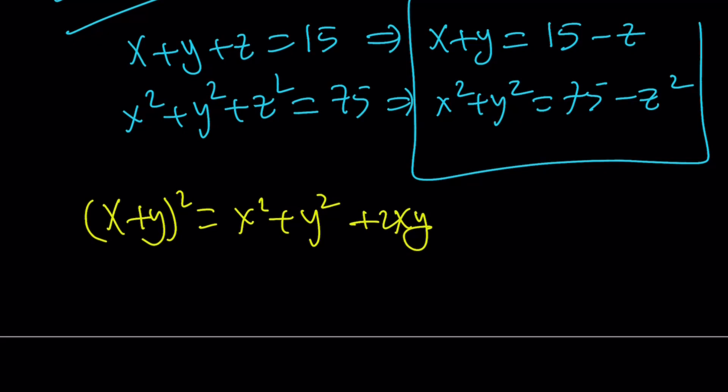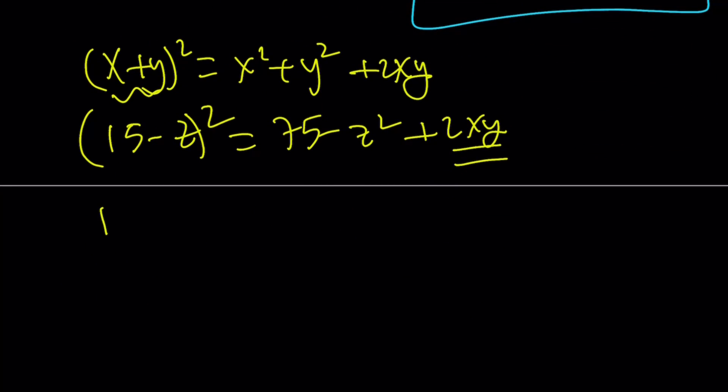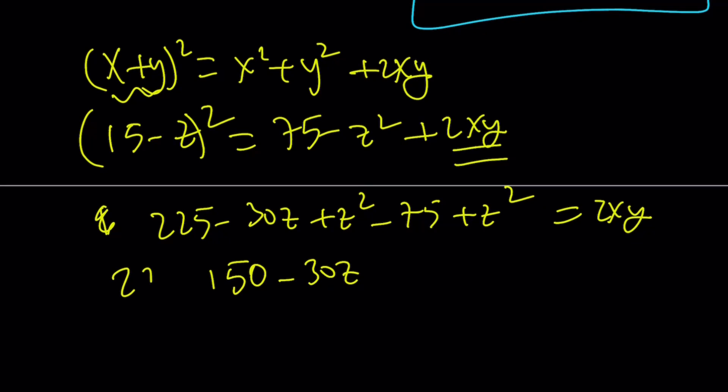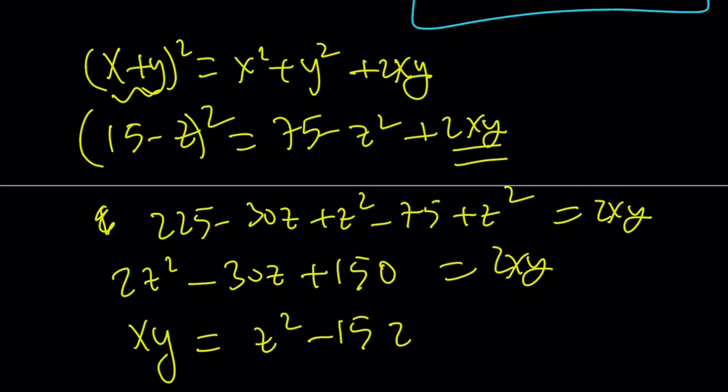Now, x plus y is 15 minus z. So we're going to square that. x squared plus y squared can be written as 75 minus z squared, plus 2xy. Now, from here, we can solve for xy. 15 minus z squared is 225 minus 30z plus z squared. And then you can just go ahead and bring these over and then isolate the 2xy. And if you simplify this a little bit, you're going to get 150 minus 30z plus 2z squared. This is equal to 2xy. If you divide both sides by 2, you're going to get xy, which can be written as z squared minus 15z plus 75.